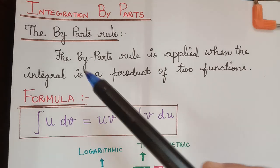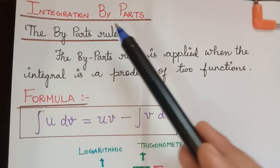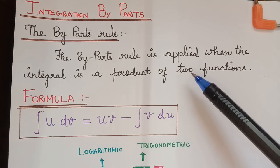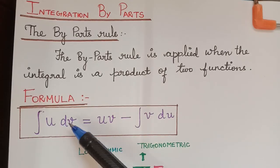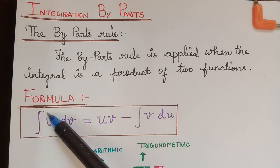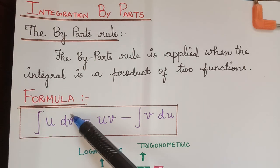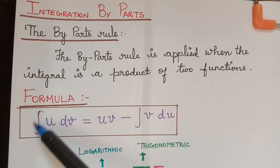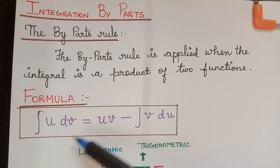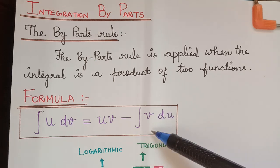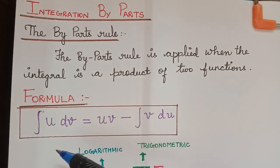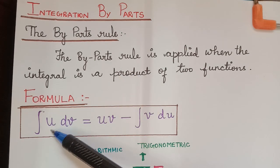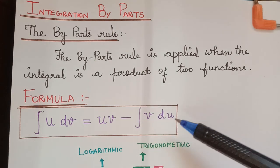Hello students. Under the topic integration, we are going to learn a series of lectures on integration by parts. The by parts rule is applied when the integral is a product of two functions, where we will be choosing one function as u and another function as dv, through which we will be obtaining v. The formula used here is: integral u dv equals uv minus integral v du. The evaluation of this integral depends upon the proper choice of u and v — u is chosen such that the integral v du is easily integrable.